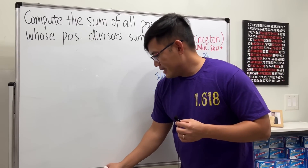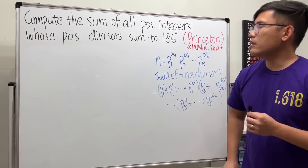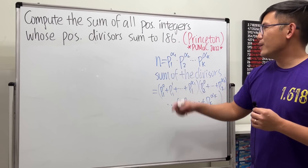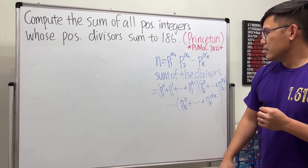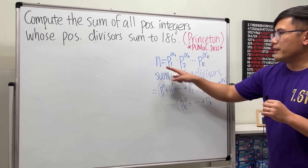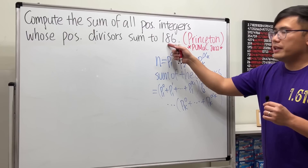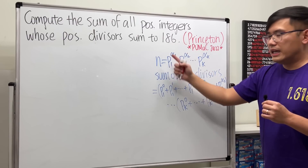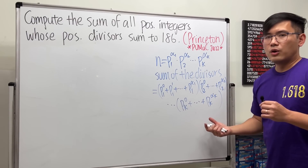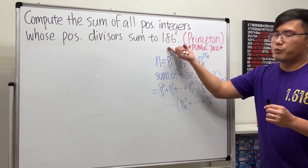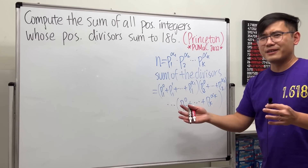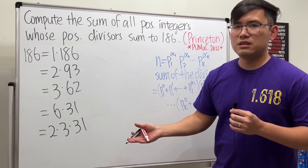The idea is: I want the sum of divisors of a number to equal 186, and the formula tells us that's a product of expressions of this kind. So I'm going to factor 186 — actually just factor it, not necessarily into prime factors.